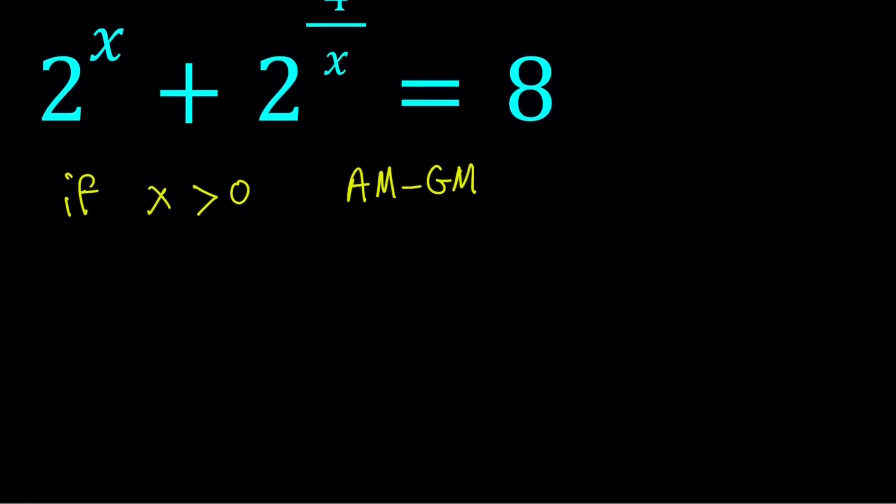So AM-GM inequality is basically you take two numbers and evaluate or find their arithmetic mean or average, and it's always going to be greater than or equal to their geometric mean. That's what AM-GM means. Arithmetic mean is always greater than or equal to GM. And you can easily test this with numbers like 2 and 8.